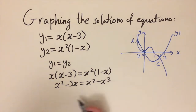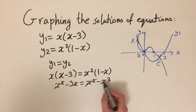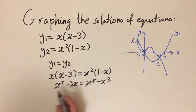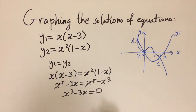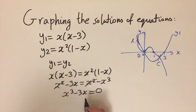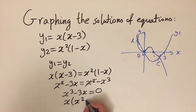The x squared terms cancel out. Moving the x cubed term to the left gives us x cubed minus 3x equals zero. This is a cubic equation. Both terms have an x in them, so we can factorize that out to get x times (x squared minus 3).